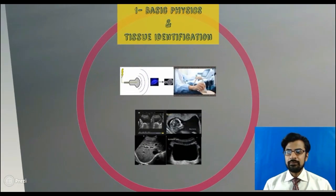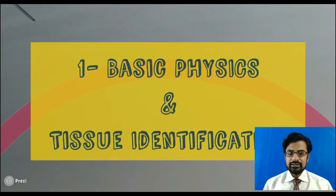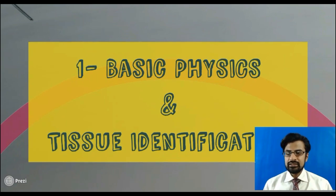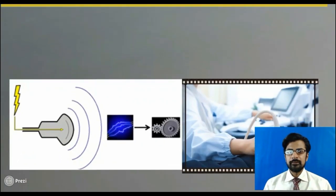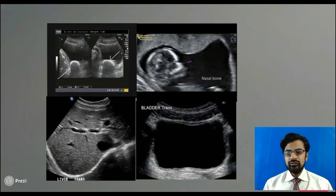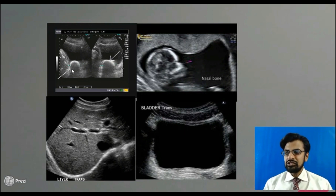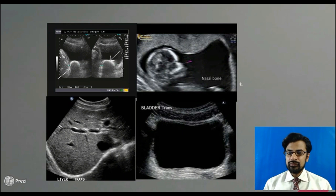In the first step, we will briefly discuss the basic principles of physics which are responsible for ultrasound image formation. Then you will learn tissue identification on the basis of ultrasound physics — meaning which structures appear white, which structures appear gray or black and white, and what is the appearance of blood, air, lymph nodes, stones, and others.